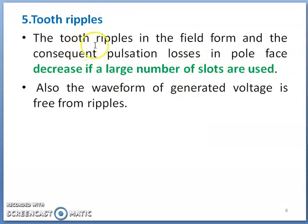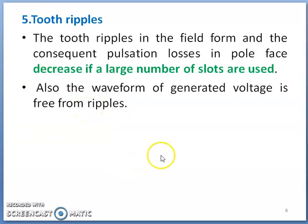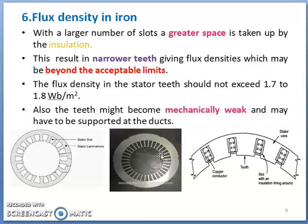Regarding tooth ripples, the tooth ripples in the field form and the pulsation losses in the pole face decrease if a larger number of slots are used. When the number of slots is more, tooth ripples as well as pulsation losses decrease, and the generated waveform will be free from ripples — close to a sine wave — due to the larger number of slots.